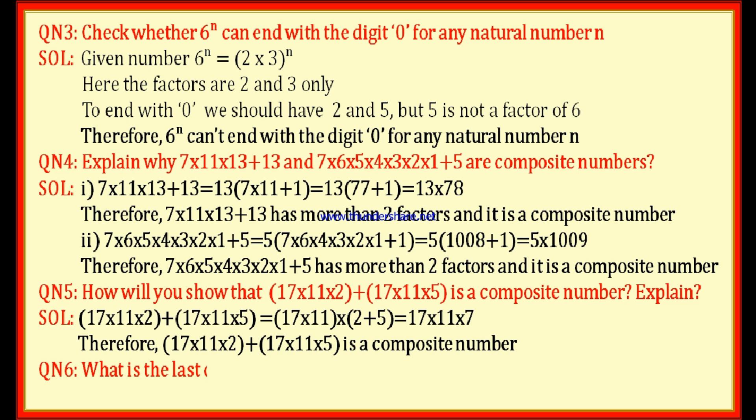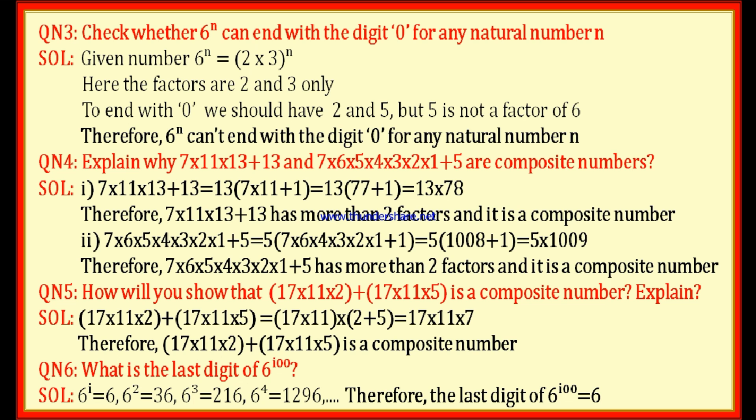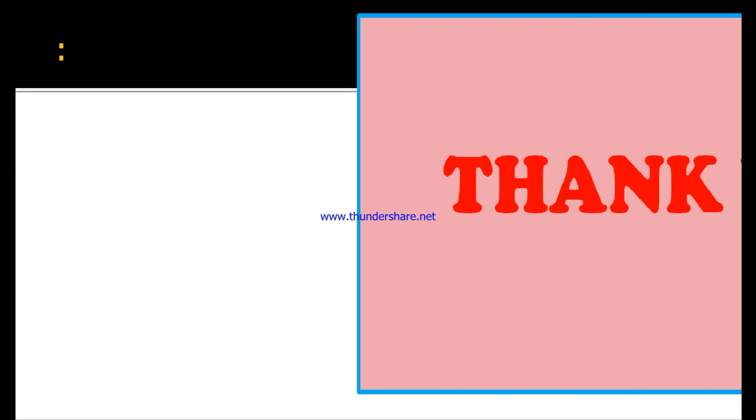Question number 6: what is the last digit of 6^100? Observing the pattern: 6¹ = 6 (units digit 6), 6² = 36 (units digit 6), 6³ = 216 (units digit 6), 6⁴ = 1296 (units digit 6). The units digit is always 6 for any power of 6. Therefore, the last digit of 6^100 is 6. If you have any doubts, you can post them in the comment section. Thank you.